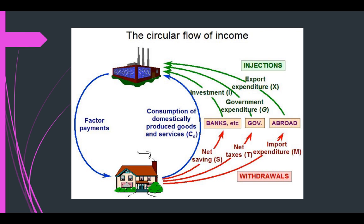So you can see here we have consumption — that's the C — investment (I), government expenditure (G), and export expenditures (X). This becomes GDP: what our economy produces in a given year.